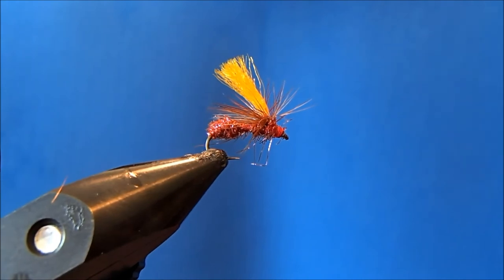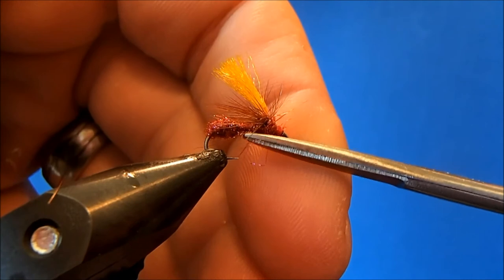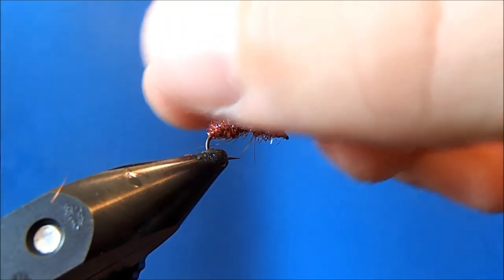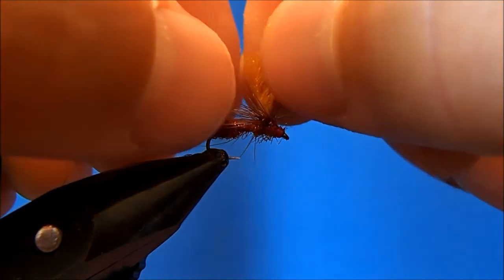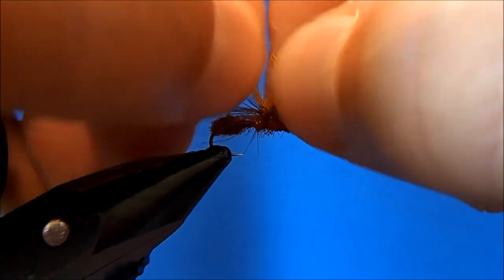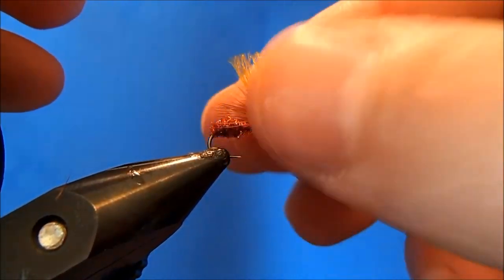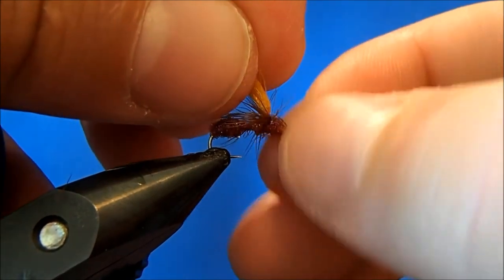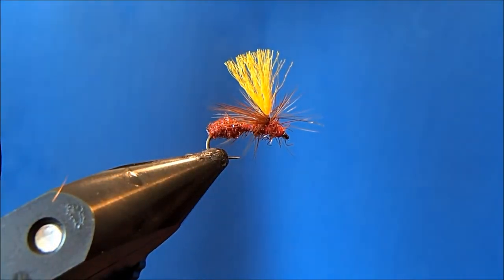Now a lot of times when you tie a parachute pattern, you'll notice as you're doing it, some of the hackle gets kind of out of place. One trick, if it starts to slide up the post that you can do to manage it, especially with this Antron, all you need to do is if you split it, it'll help push that back down the post. Then you can play with the hackle to make sure it sits just how you'd like it.